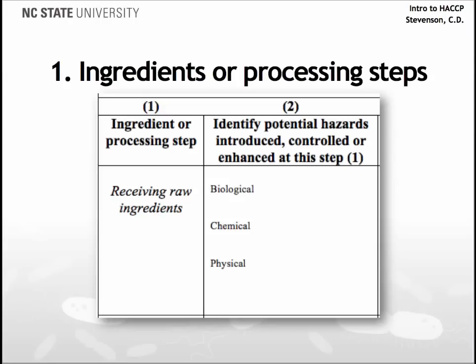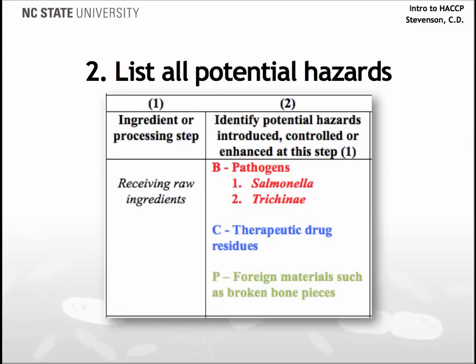Let's use a Frankfurter process as an example. Now we need to identify potential hazards. A hazard is a biological, chemical, or physical agent which is likely to cause illness or injury in the absence of its control. At this point, the objective is to produce a list of potential hazards for evaluation. Using hazard guides developed by different agencies and commodity groups, the biological hazards are contamination from Salmonella or Trichinae. Chemical hazards are therapeutic drug residues left over from the diet of the animals that were harvested. Physical hazards consist of foreign materials such as broken bone pieces.